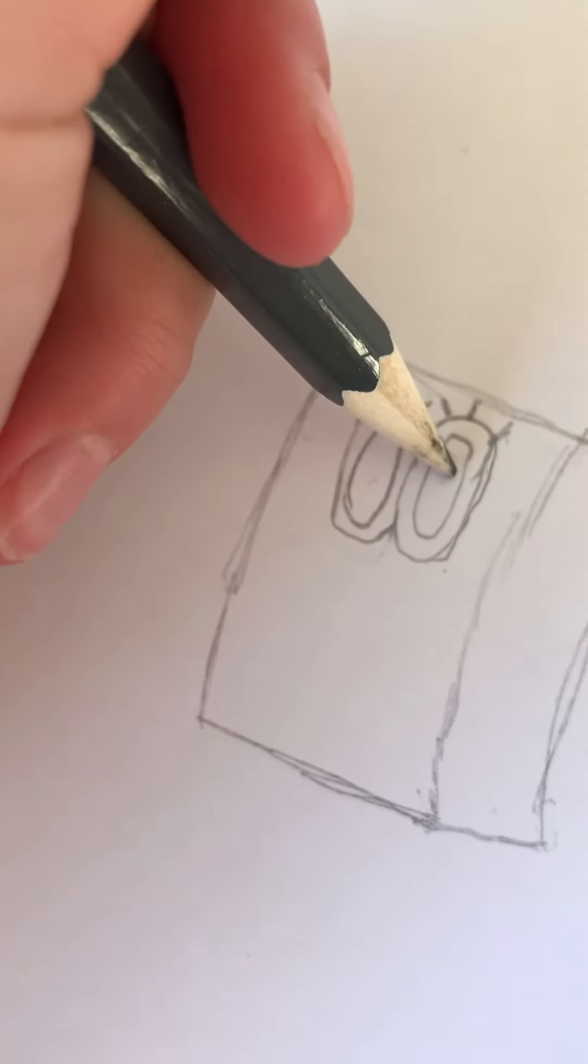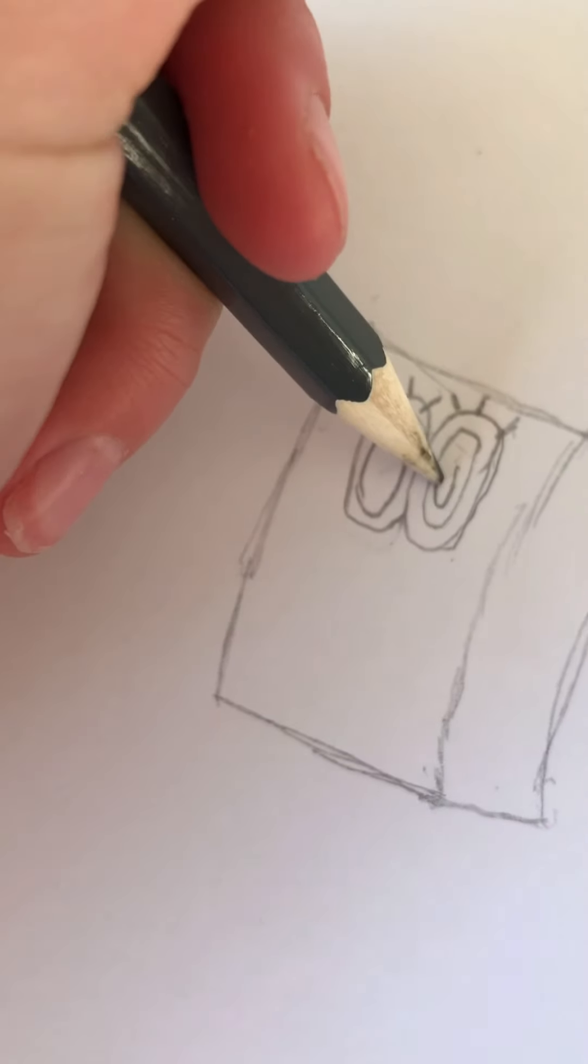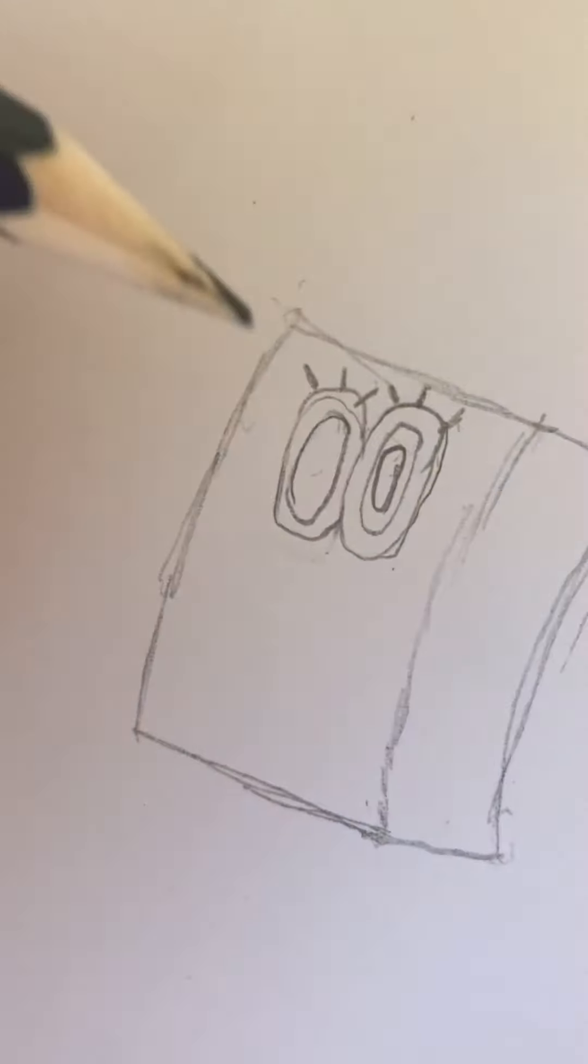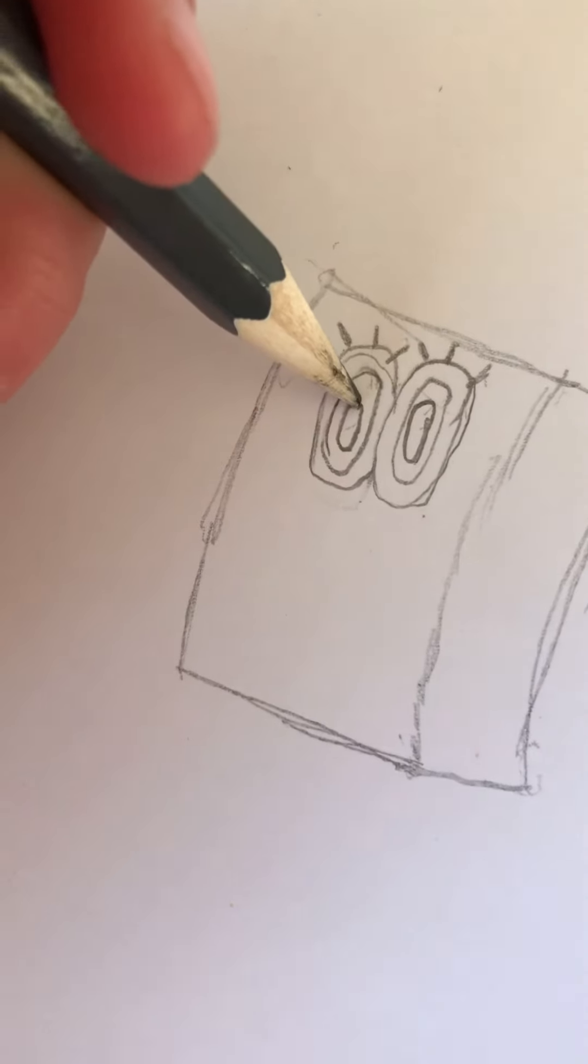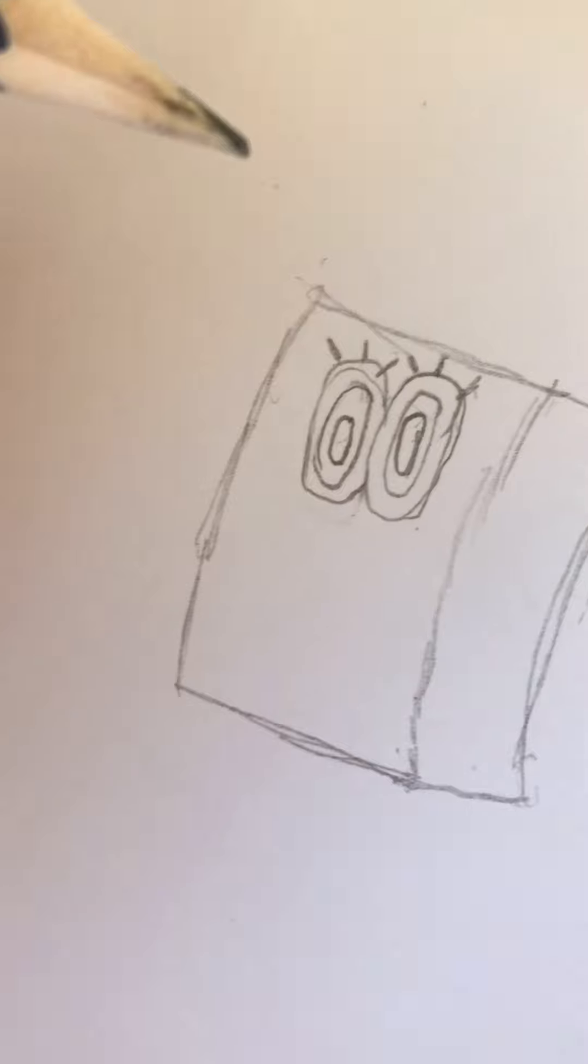Next, inside of that circle, you want to do another one. Oops, that was really bad. I'm definitely fixing that. But not like how I did this one. Kind of make it smaller inside. And then you can color those black. But I'm going to wait till the end with my colored pencils.